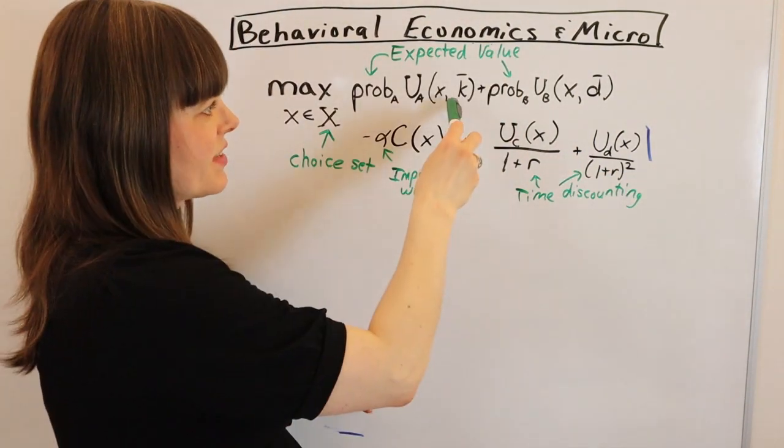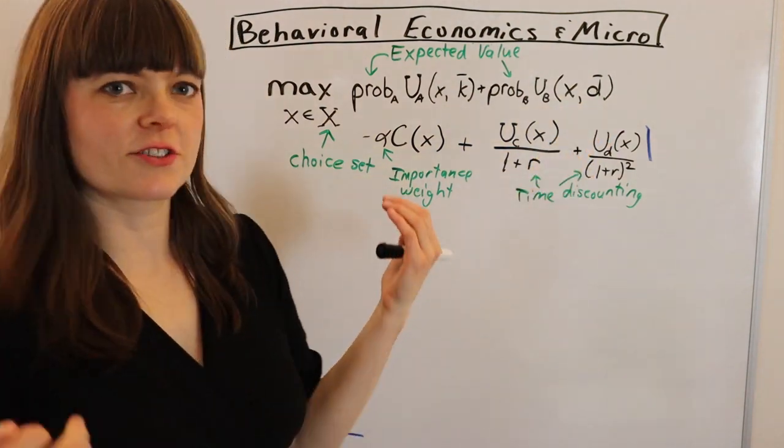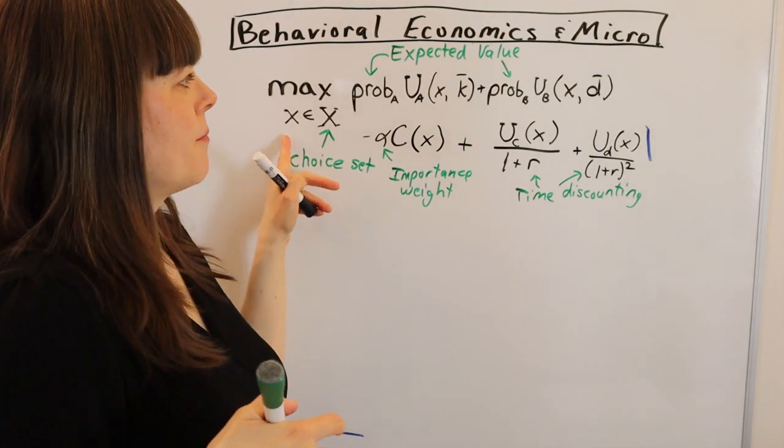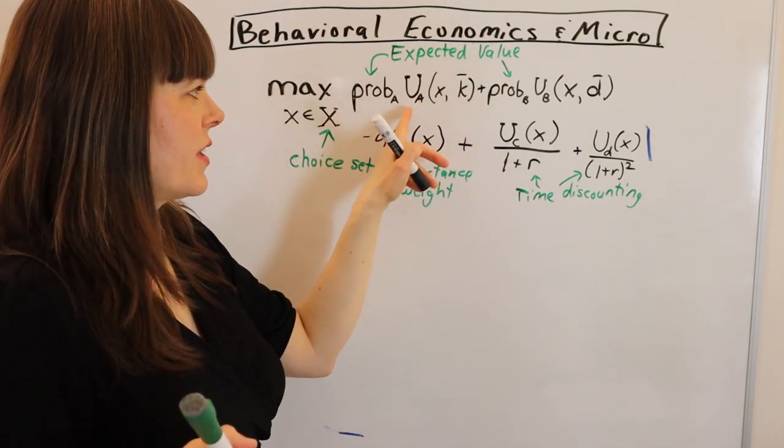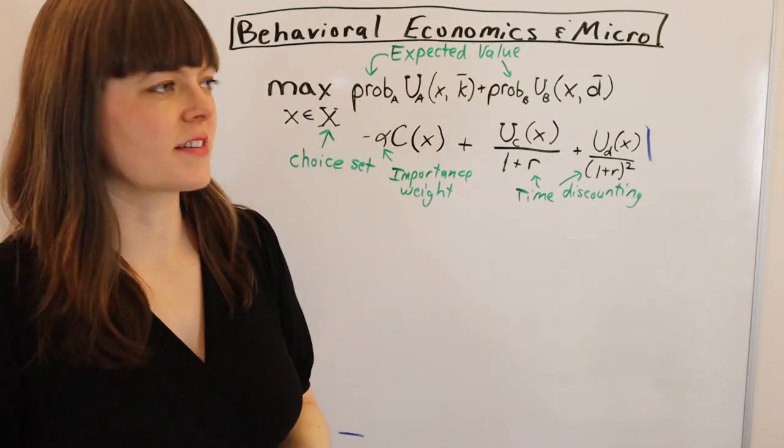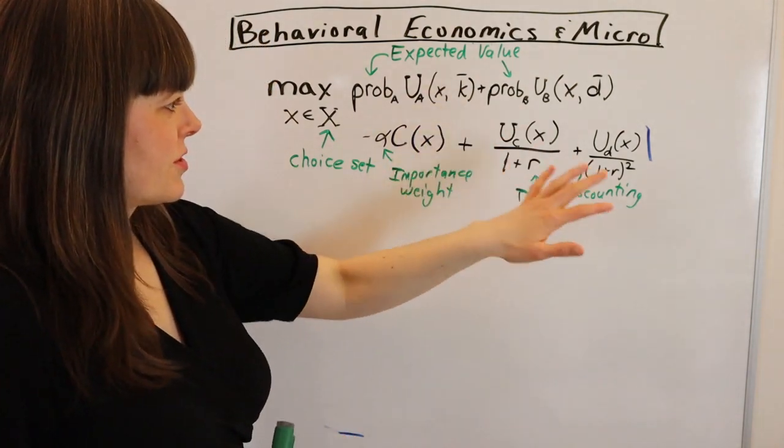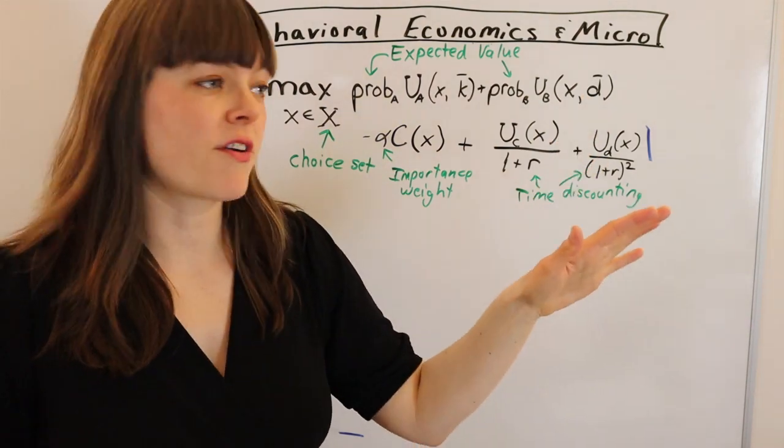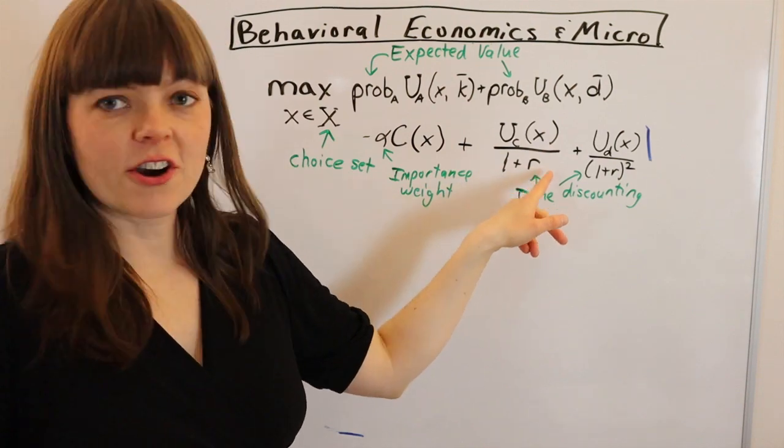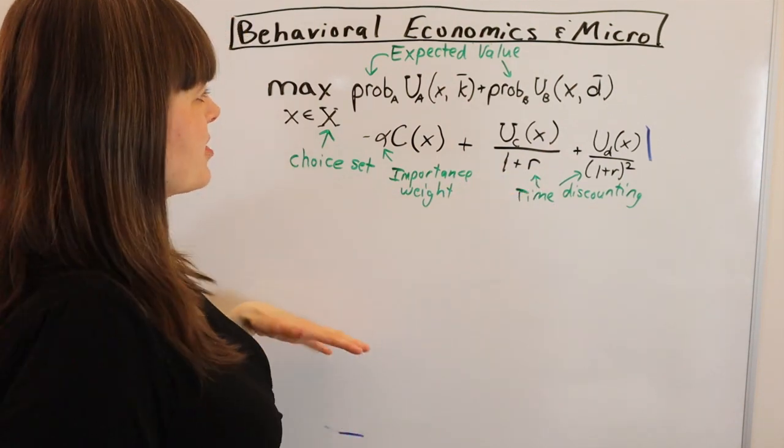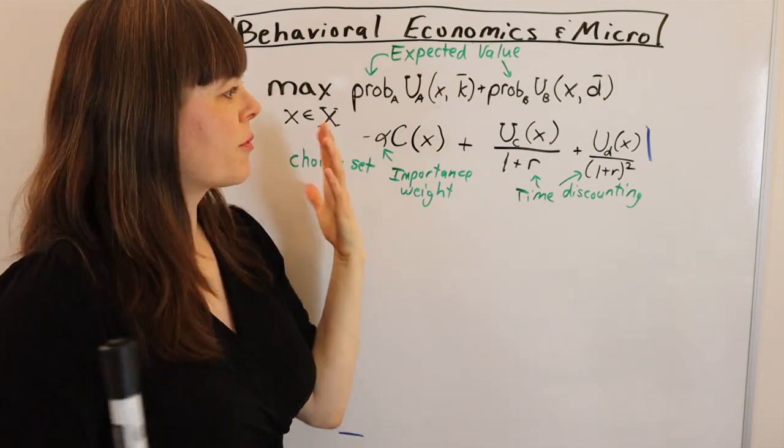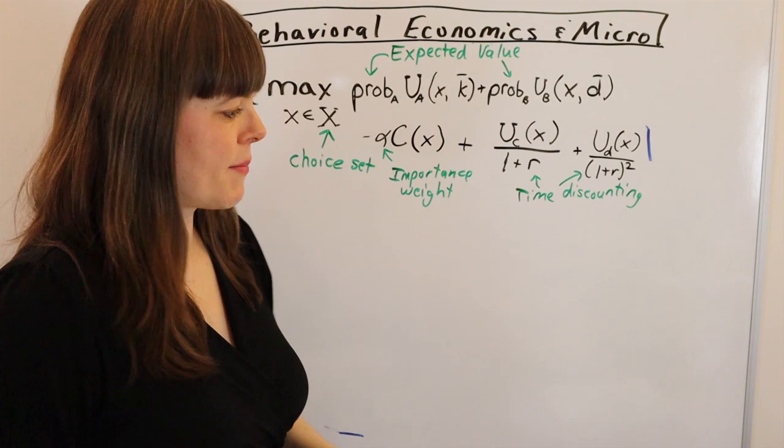And then I've added a couple of exogenous variables into our model. These are just things that do not respond to the choice variable, but they can influence the relationship between utility and our choice variable. So they'll end up influencing the final decision. We can put exogenous variables wherever we want. Our importance weight is an exogenous variable in this model. R, the rate of return, is also an exogenous variable. But I've just stuck a couple of extra ones in to help make some points as we're talking about behavioral economics.